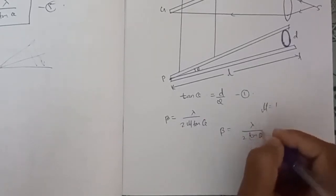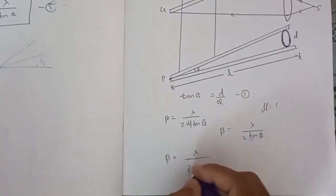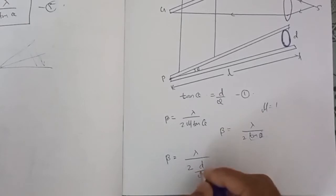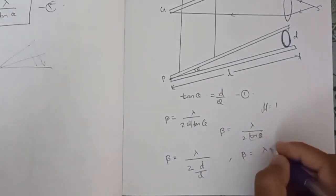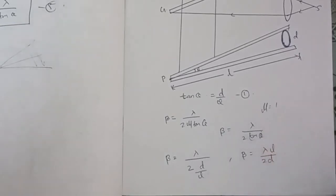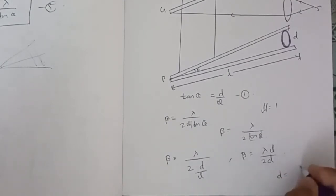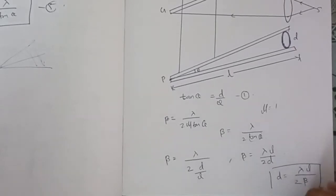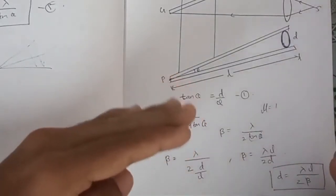We substitute the value of tan theta. Beta is equal to lambda by 2 times d by L. Rearranging, we get that the diameter of the wire is equal to d equals lambda L by 2 beta.